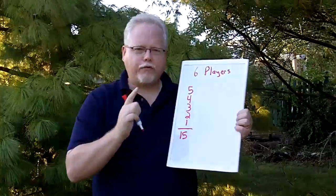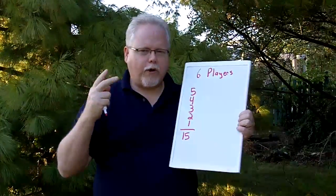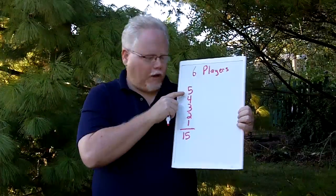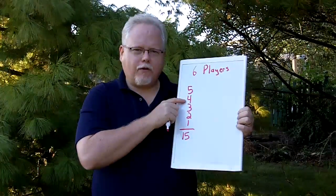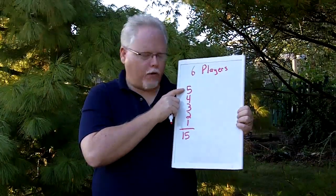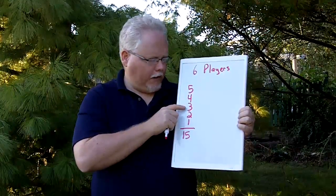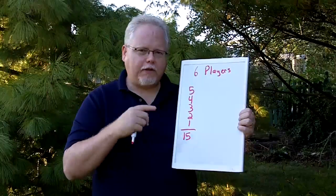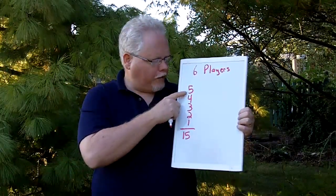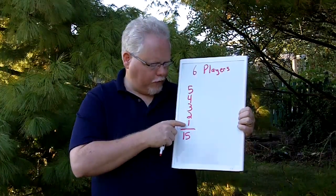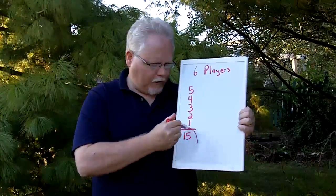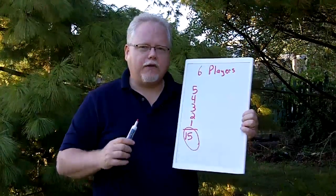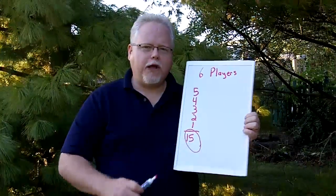With six players, the first player can't play against themselves — it always requires two players — so that first player is going to play against five other players. The second player is going to play against one of those already counted, plus four players, and then so on. So with six players, if each has to play someone else one time, you add five plus four plus three plus two plus one, and the answer is 15. There's a total of 15 combinations if you have one person playing another person.